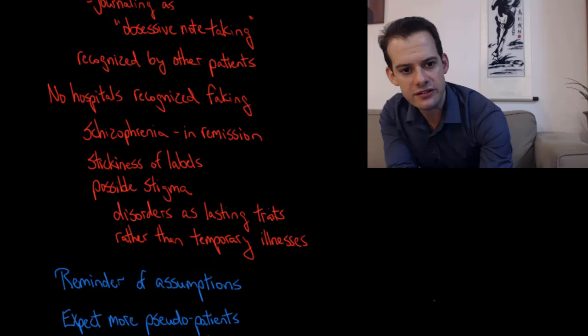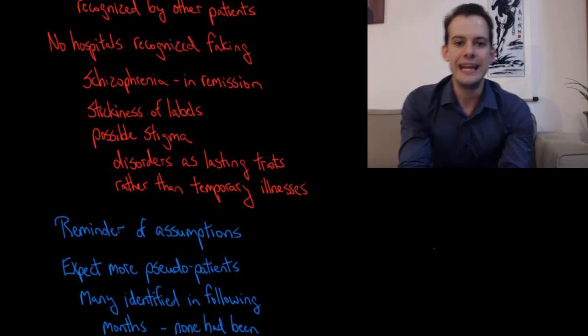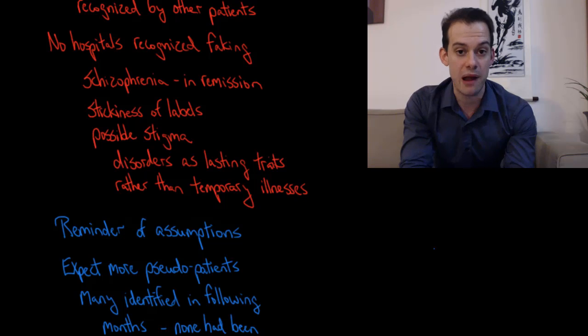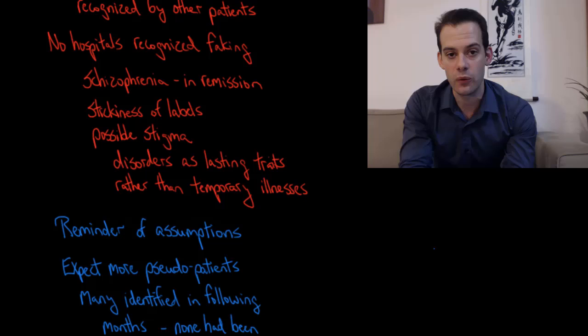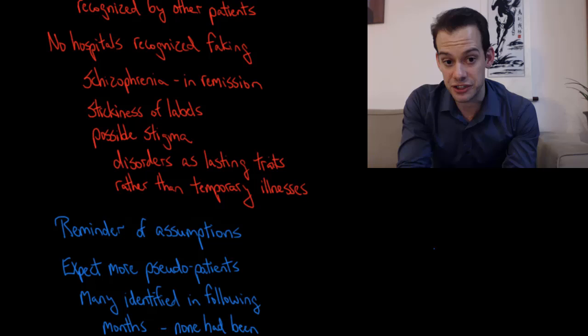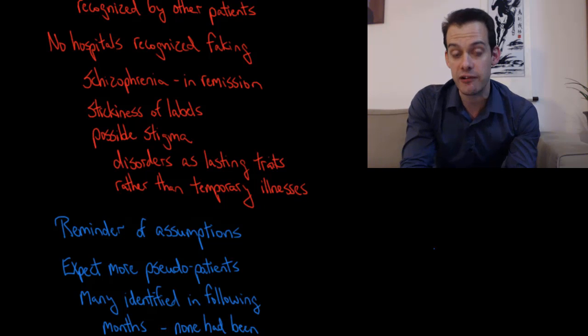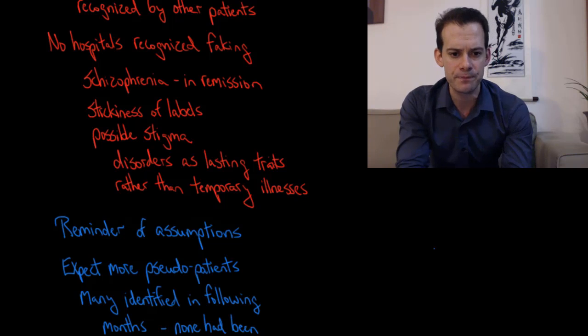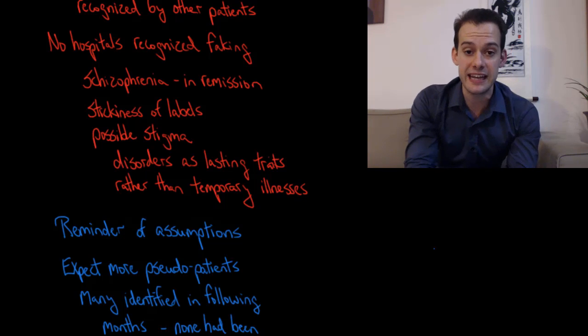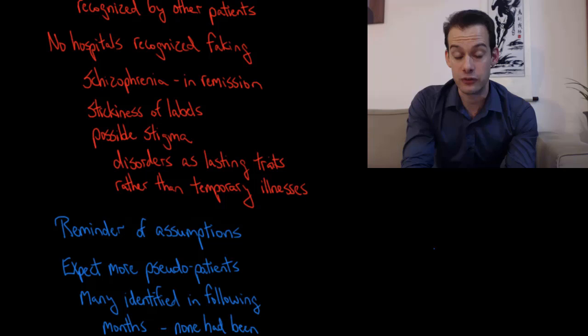None of the hospitals recognized that the pseudo patients were faking. So even when they were released, they weren't released and told it's a misdiagnosis, you probably didn't actually have schizophrenia, you're fine. Instead it was: you had schizophrenia and now your symptoms are in remission. So they were often labeled as schizophrenic in remission. This is a label that would follow them in the future. And this brings up the issue of the stickiness of labels in mental health and the possibility of stigma.